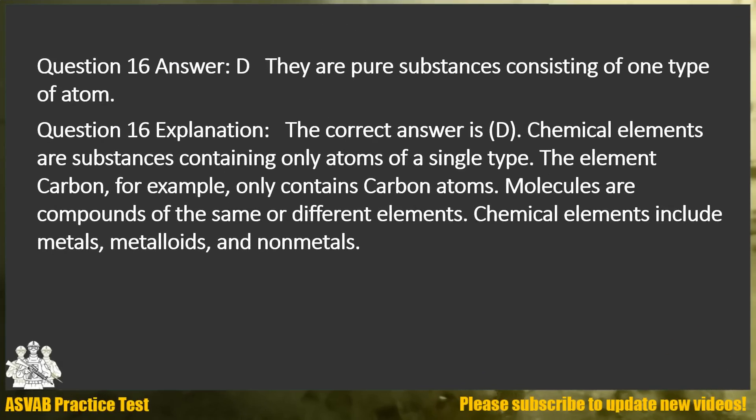Answer: D. They are pure substances consisting of one type of atom. Explanation: The correct answer is D. Chemical elements are substances containing only atoms of a single type. The element carbon, for example, only contains carbon atoms. Molecules are compounds of the same or different elements. Chemical elements include metals, metalloids, and non-metals.